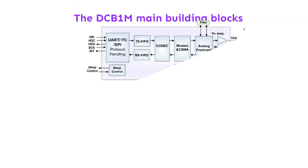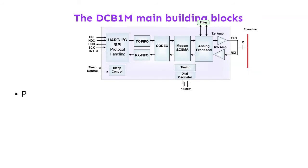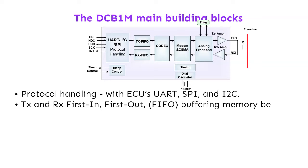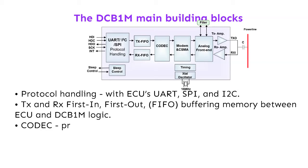The DCB1M main building blocks: Protocol handling with ECU's UART, SPI, and I2C. TX and RX first-in, first-out FIFO — buffering memory between the ECU and the DCB1M logic.